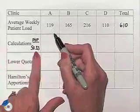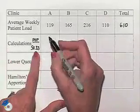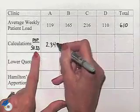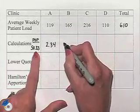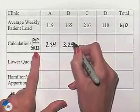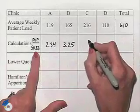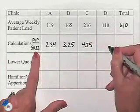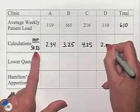So we'll take 119 and divide by 50.83. And that value is 2.34. For clinic B, we come up with 3.25. For clinic C, the value is 4.25. And for clinic D, the value is 2.16.